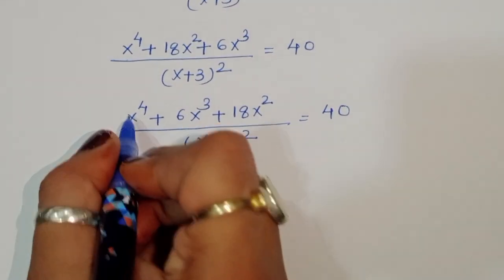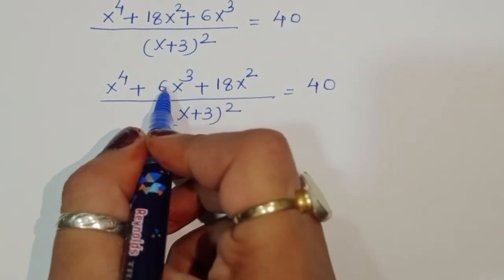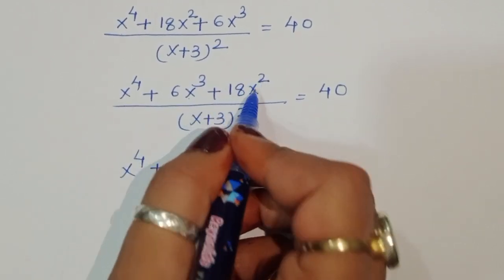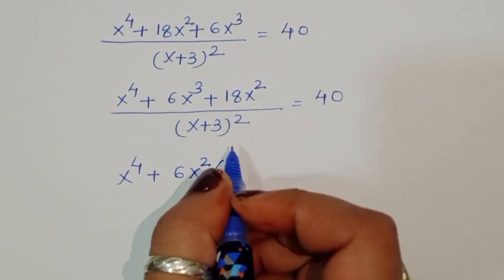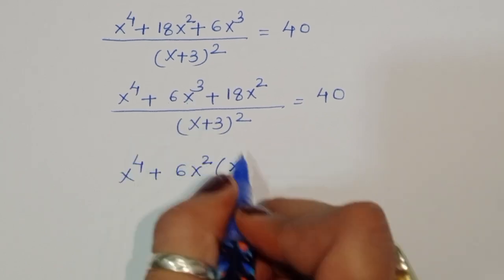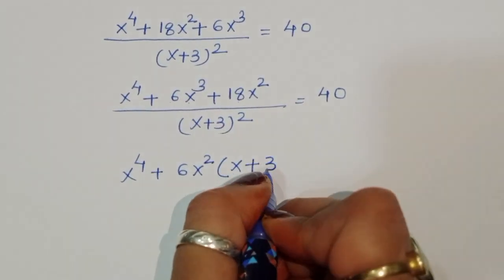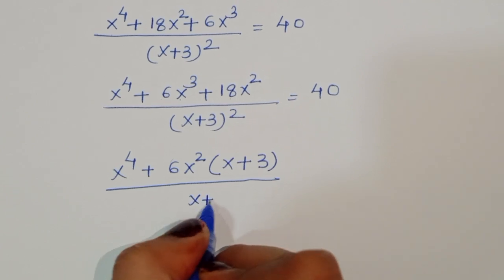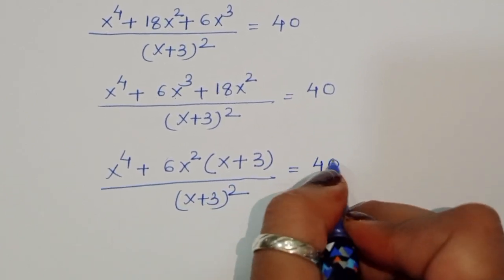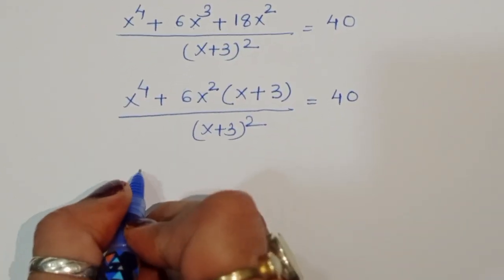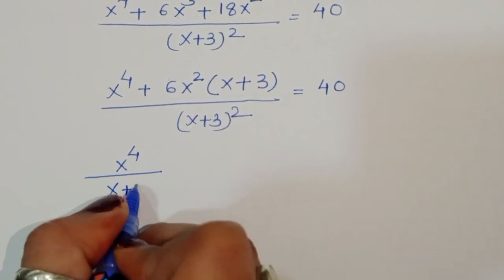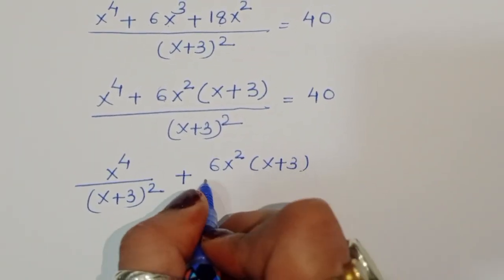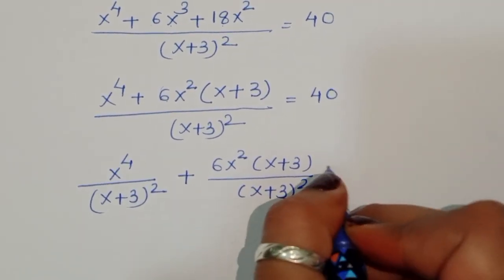We can take 6x² common from the numerator terms, since 6 × 3 = 18. So we separate: x⁴/(x+3)² + 6x²(x+3)/(x+3)² = 40. Cancelling (x+3) from the second term: x⁴/(x+3)² + 6x²/(x+3) = 40.